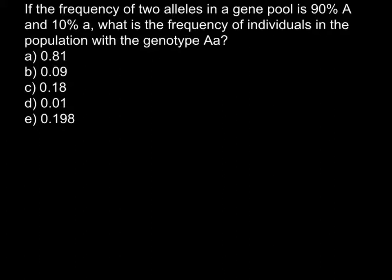If the frequency of two alleles in a gene pool is 90% capital A or dominant and 10% small a or recessive, what is the frequency of the individuals in the population with the genotype capital A small a? Or what is the frequency of the heterozygous condition?